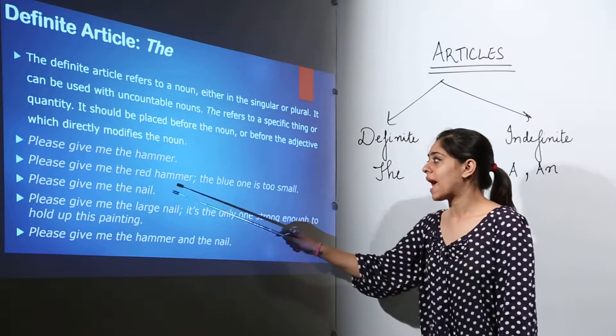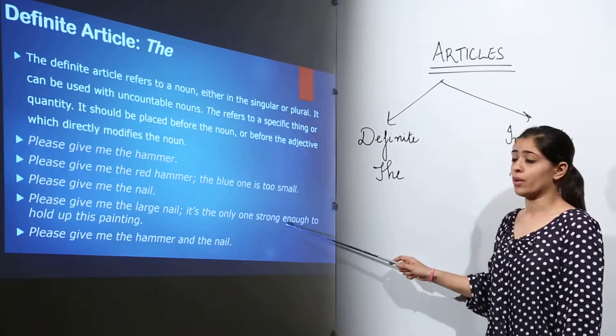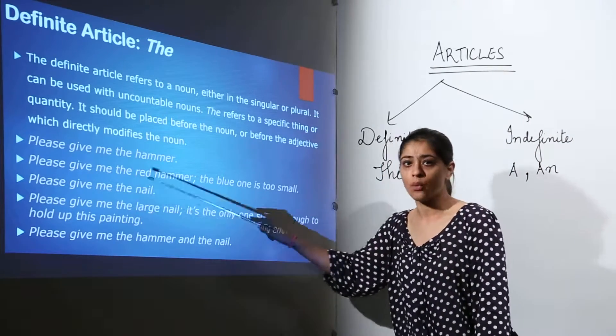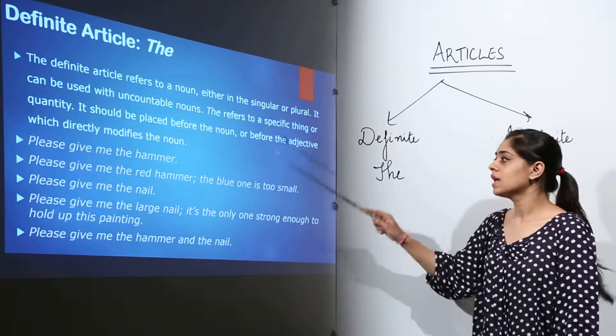Please give me the red hammer. The blue one is too small. Here the article is being used just before the adjective where we are talking about a red colored hammer.